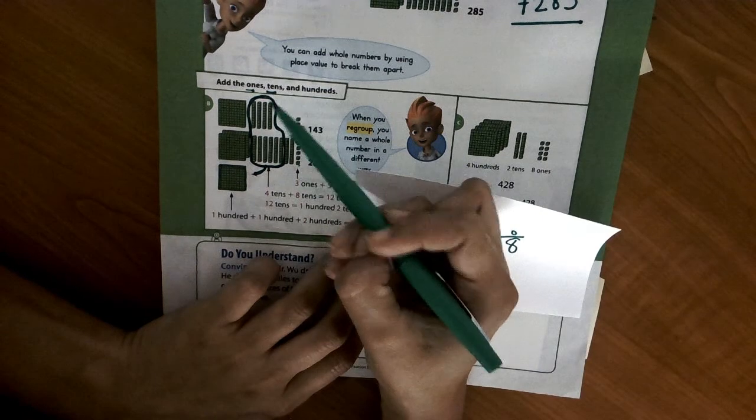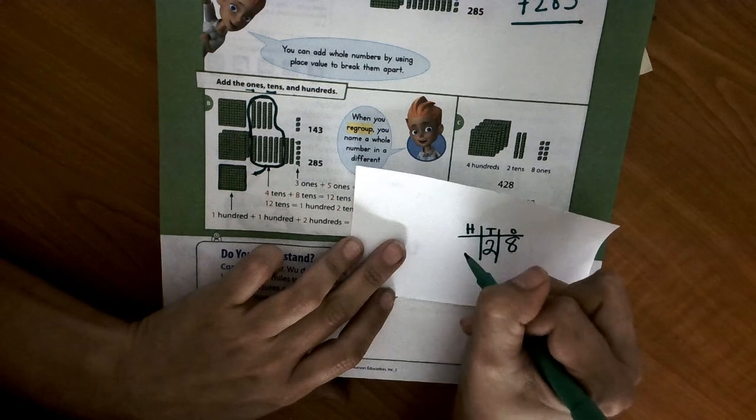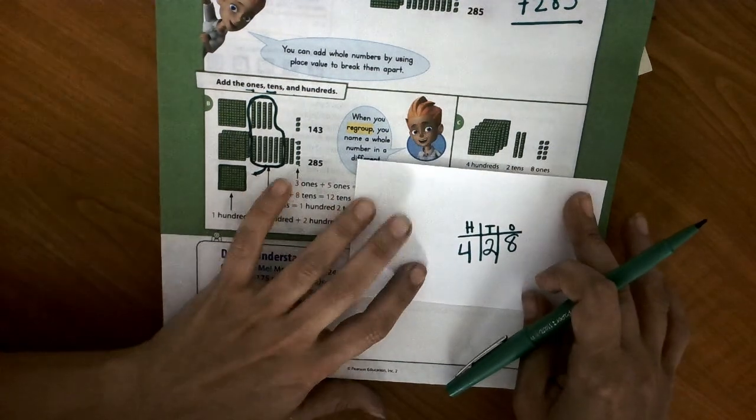Now we can count our hundreds. 1, 2, 3, 4. We have 4 hundreds. We got the number 428.